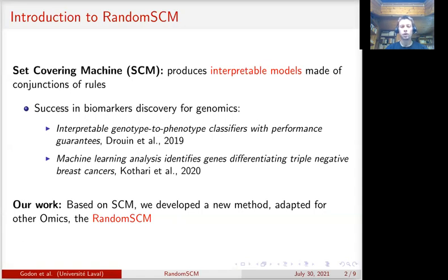Other omics data, like metabolomics for example, are more noisy, and the biomarkers are more complex patterns. The set covering machine was limited in this context. To address that, we improved the method and developed the random set covering machine.